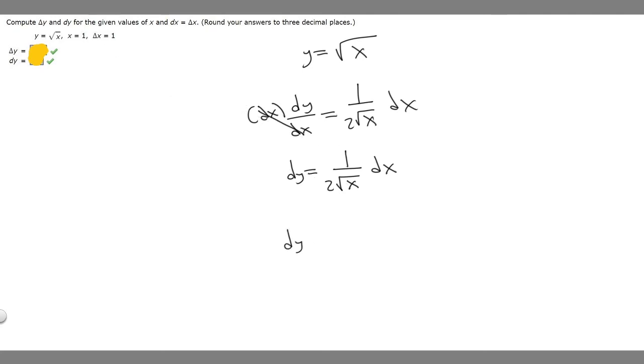So dy is going to be equal to 1 over 2 times the square root of x, which is just 1. So the square root of 1 is just 1, divided by 2 is just 2. So 1 half. And so they tell us that dx is equal to delta x. Delta x is 1, so that just means dx is 1.